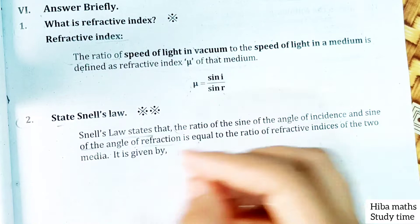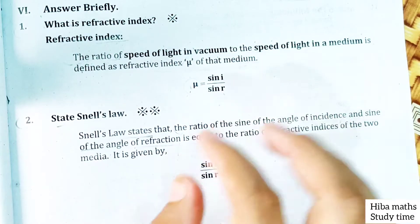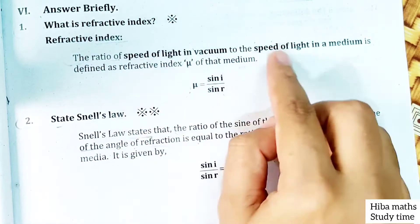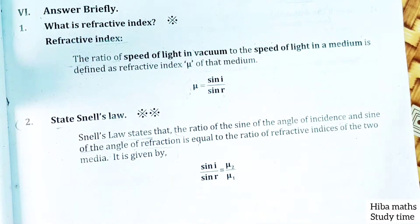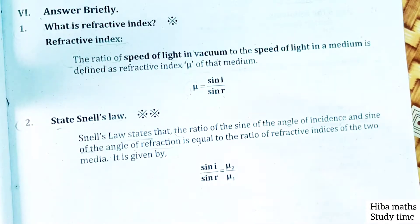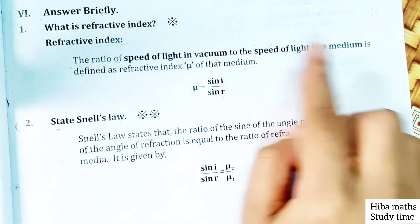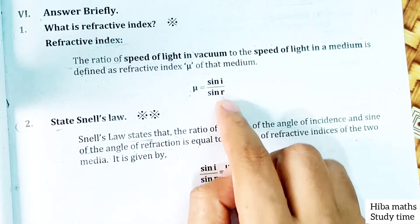Speed of light in vacuum divided by speed of light in a medium. Medium is air, water, and other materials through which light travels. So this is the ratio for refractive index.